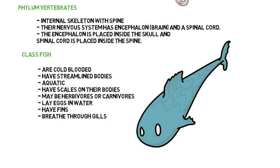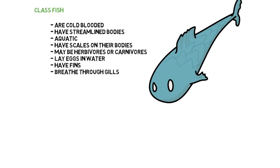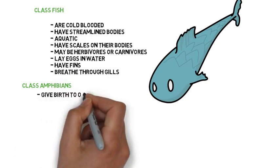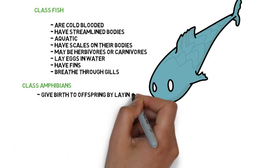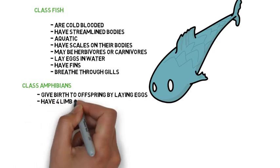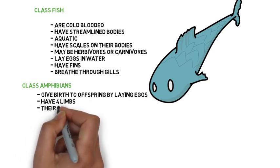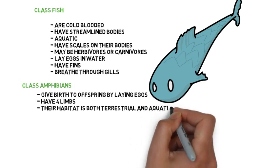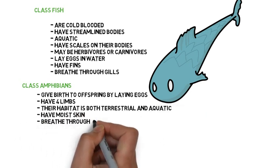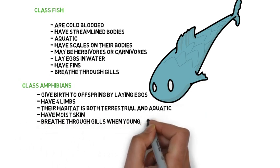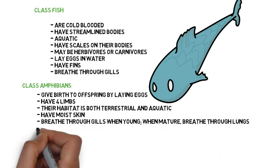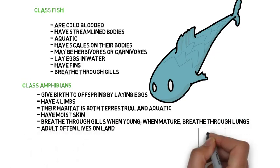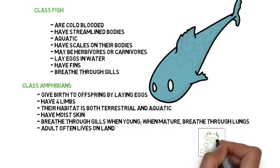Class Amphibians. They give birth to offspring by laying eggs. They have four limbs. Their habitat is both terrestrial and aquatic. They have moist skin. They breathe through gills when they are young, and when mature, breathe through lungs. The adult often lives on land. Examples of amphibians are the frog and the salamander.